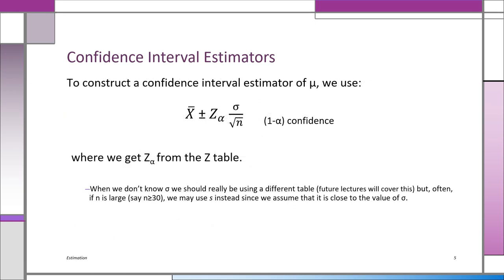Now we'll learn how to construct the confidence interval estimator, or CIE. We're constructing a CIE for mu. The sample evidence in these problems will be the standard deviation S, the sample mean X-bar, and the sample size N. Ideally we should have sigma, but we'll use S instead. The formula is X-bar plus or minus Z_alpha times S over the square root of N. The Z_alpha value comes from the Z table and depends on how much confidence you want.